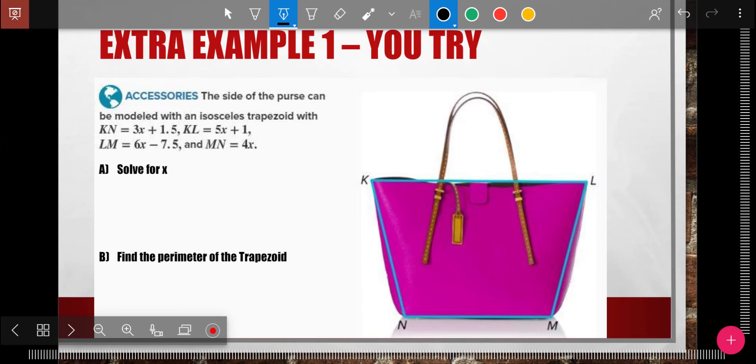All right. Next is a similar example. I would like you to pause the video here and give it a try. First, you need to realize it is an isosceles trapezoid and solve for X. So do part A here first. Pause the video and do part A.